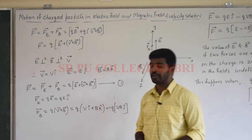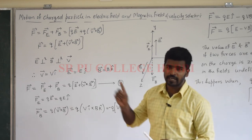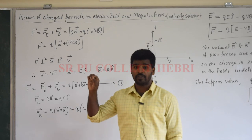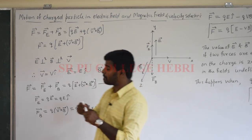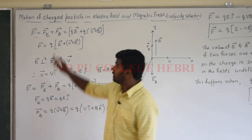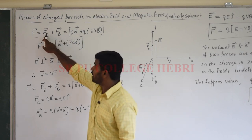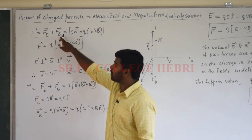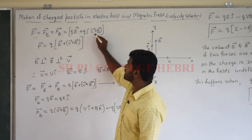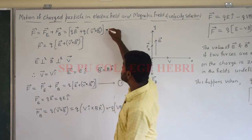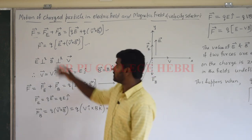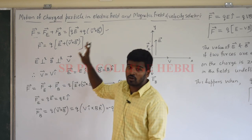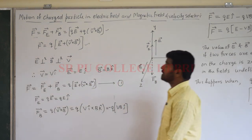In this session I will start with the concept of motion of a charged particle in case of both electric field and magnetic field. Consider a charged particle in both electric and magnetic fields. The total force on the moving charged particle is F vector = F_E vector + F_B vector = q times E vector + q times (v vector cross B vector). This force is known as the Lorentz force, so F vector = q(E vector + v vector cross B vector).